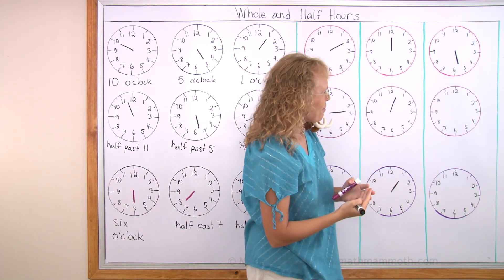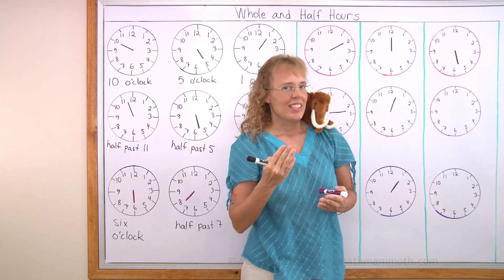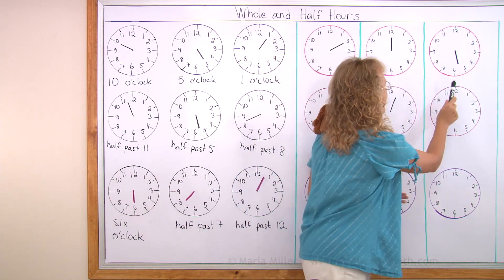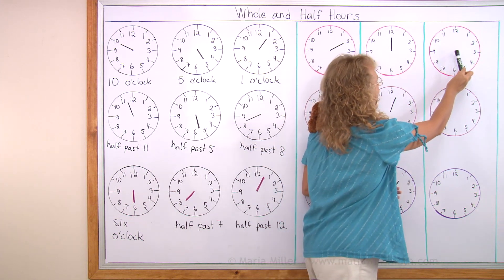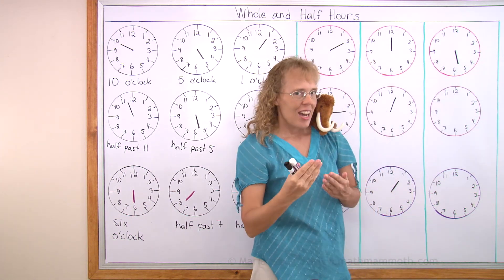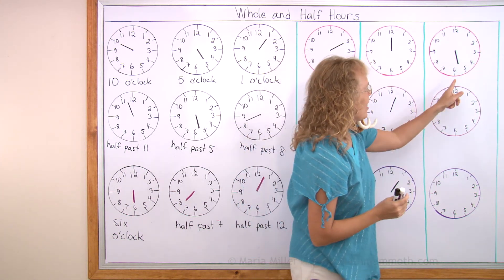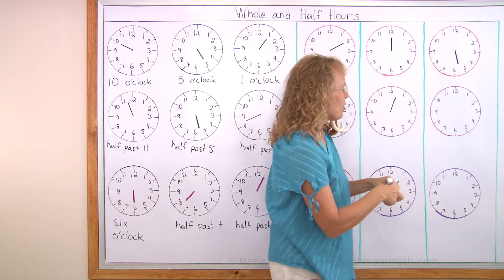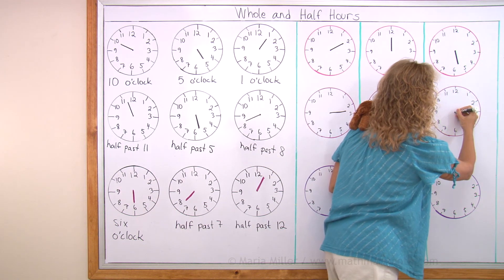Over here. What time is it? It's half past 5. And then half an hour later. The hour hand is here and moves half an hour. Okay? Half a step so to speak. So it will be pointing to 6. Right? And so it will be 6 o'clock.